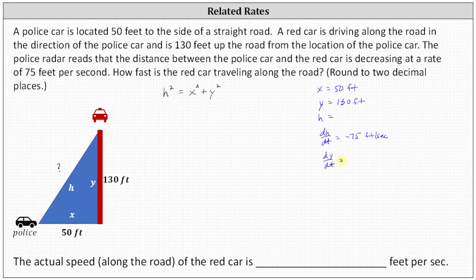We should recognize it is going to be negative because Y is decreasing as the car drives down the road. And that rate of change will tell us how fast the car is traveling down the road. But we are going to have to find H using the Pythagorean theorem.